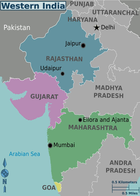The region is highly industrialized, with a large urban population. Roughly, Western India is bounded by the Thar Desert in the north, the Vindhya Range in the east and north, and the Arabian Sea in the west. A major portion of Western India shares the Thar Desert with North India and Pakistan, and the Deccan Plateau with South and Central India.